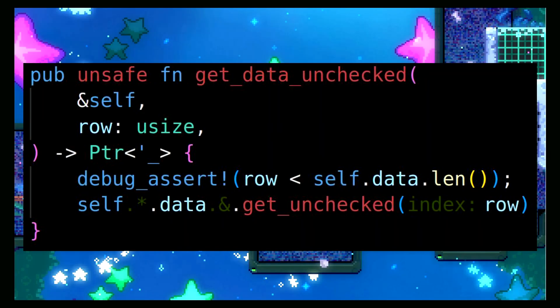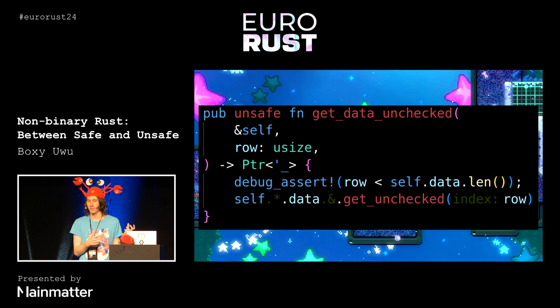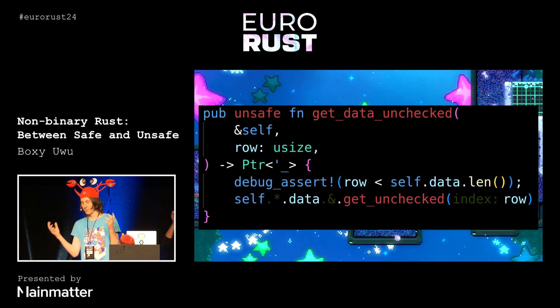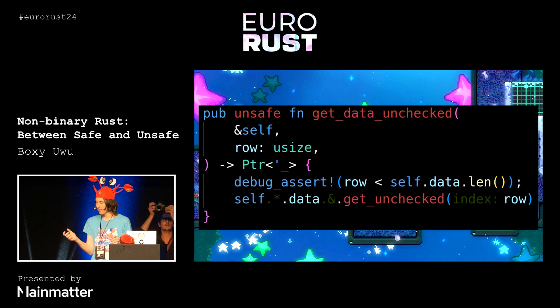The more interesting thing is that if we go back to the function, we can see that we have the Pointer type, and this kind of acts like documentation by itself. Previously we were returning a raw pointer, and now we have this nice Pointer type which is telling us where the data that we're pointing to is coming from, how long we're allowed to keep the pointer around, and when it's valid to dereference.